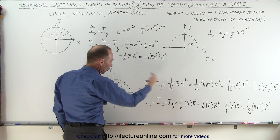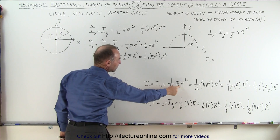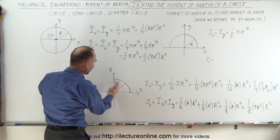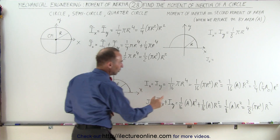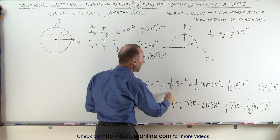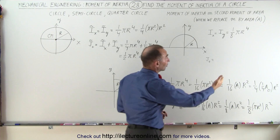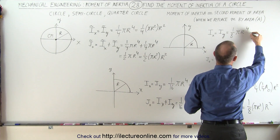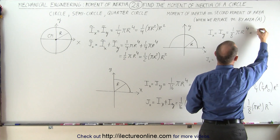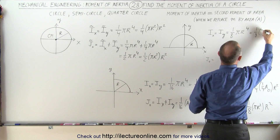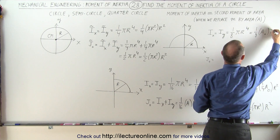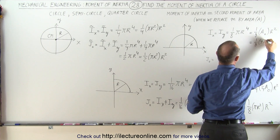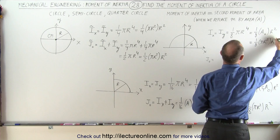If we take a look at the quarter circle, it's one-sixteenth pi r to the fourth. So if you have two quarter circles rotating about the y-axis, it should be twice this, or one-eighth pi r to the fourth — which is exactly what we have for the x-axis. Again, if you pull out a complete circle area, you get one-eighth the area of a complete circle times r squared, or one-eighth pi r squared times r squared.